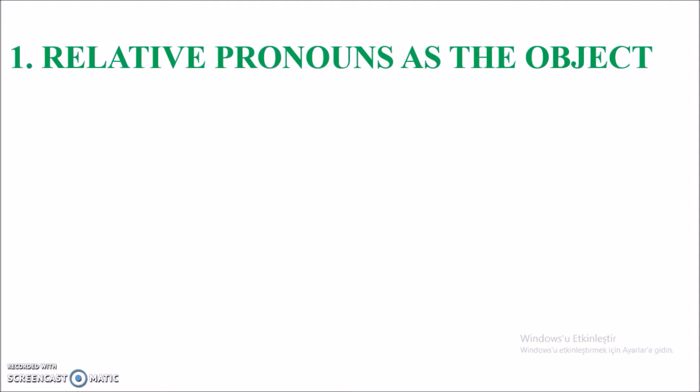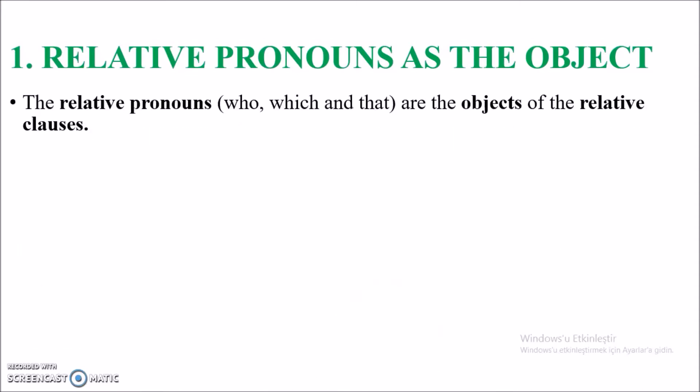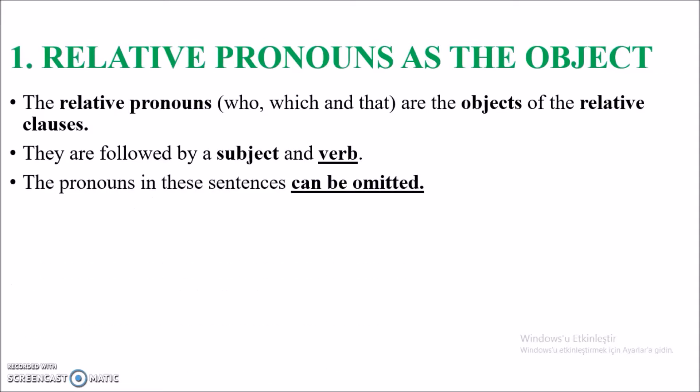Now we look at the second way to use relative pronouns — as the object of relative clauses. 'Who', 'which', or 'that' will be the objects of the relative clause because we will have a separate subject in the relative clause. This time, after the pronoun, I will see a subject first and then the verb. This is the main difference between subject and object relative clauses. The new topic is omission — if the pronoun is the object of the relative clause, you can omit it.